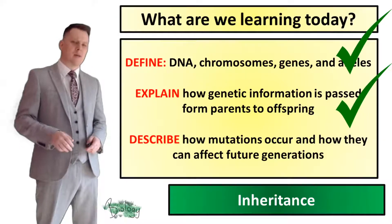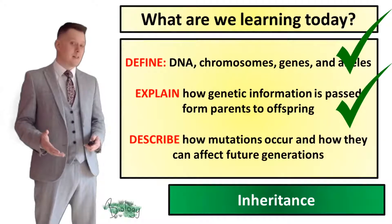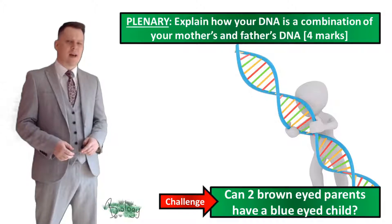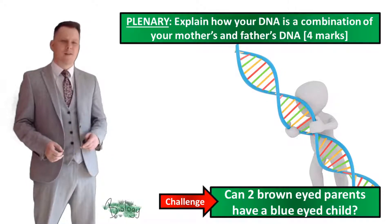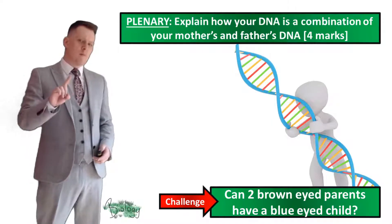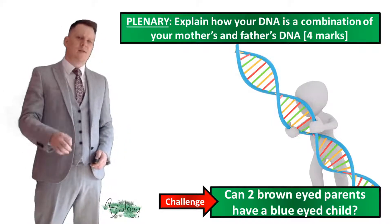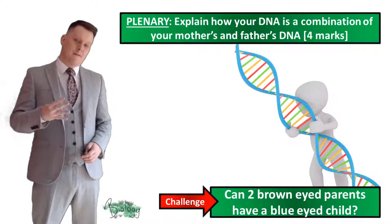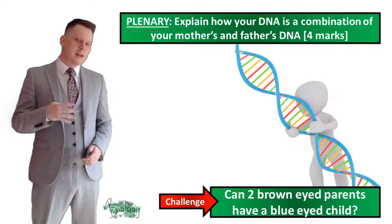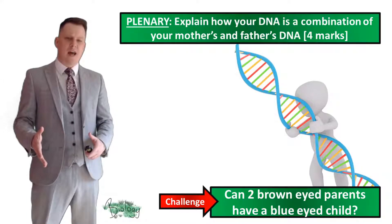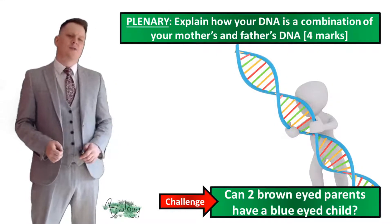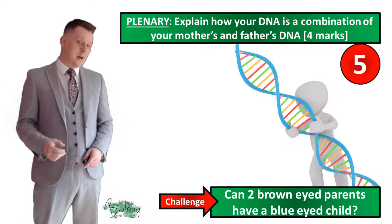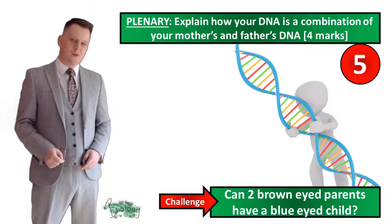So now we can describe how mutations occur and how they can affect future generations. For our plenary, explain how your DNA is a combination of your mother's and father's DNA for four marks — so you need to make four valid points. As a challenge, answer: can two brown-eyed parents have a blue-eyed child? Pause the video if you need more time.